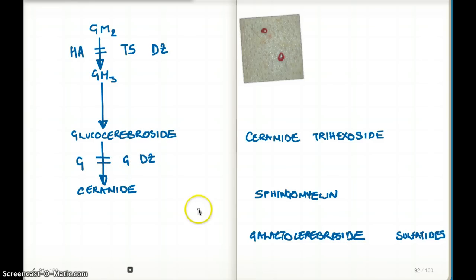Ceramide has multiple pathways. Three different things can make ceramide. One is glucocerebrosidase, which I just mentioned. Another pathway is sphingomyelin leading to ceramide. The enzyme here is sphingomyelinase, and when this is inhibited, we have Niemann-Pick disease.